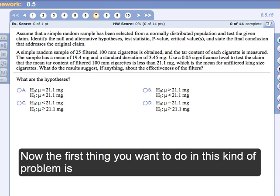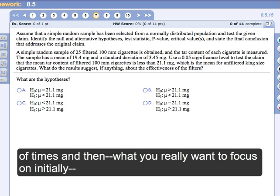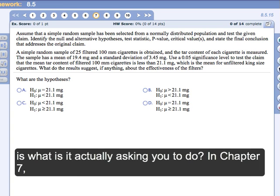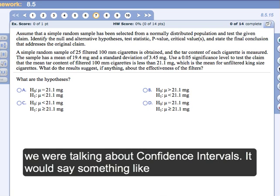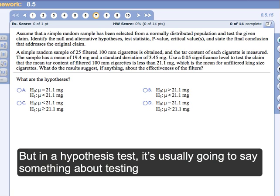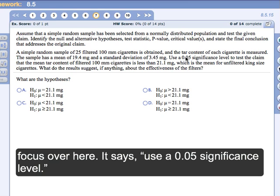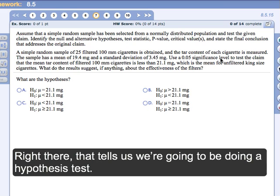The first thing you want to do in this kind of problem is read through the statement a couple times. Then what you really want to focus on initially is what is it actually asking you to do? In Chapter 7, we were talking about confidence intervals and it would say something like find a confidence interval estimate. But in a hypothesis test, it's usually going to say something about testing a claim. If we look at that, it says use a 0.05 significance level. Right there, that tells us we're going to be doing a hypothesis test.